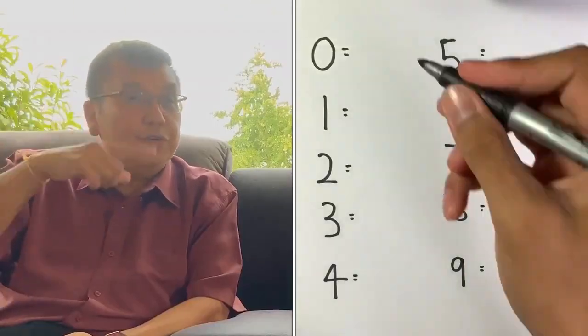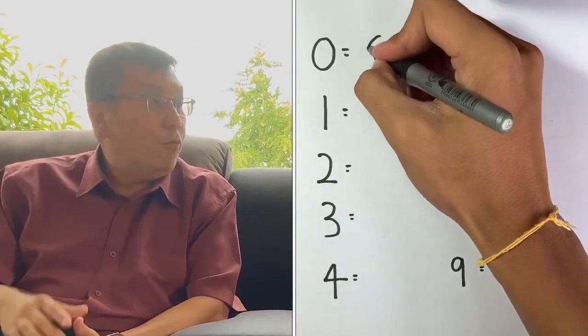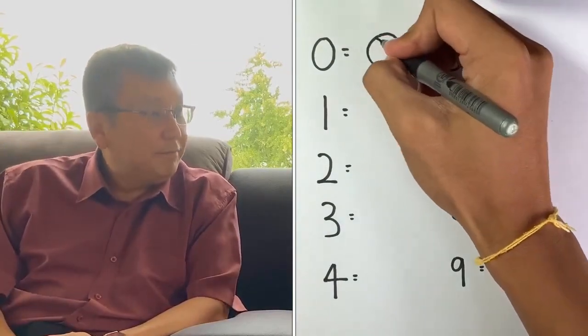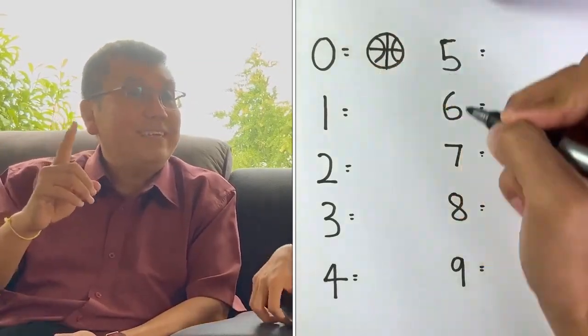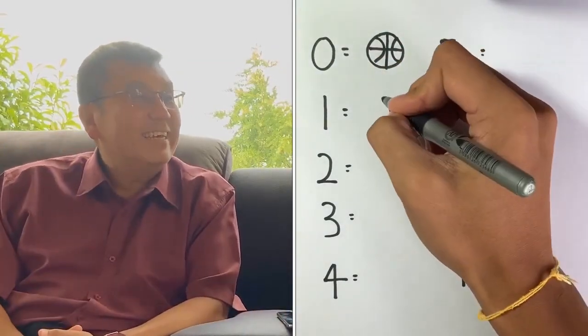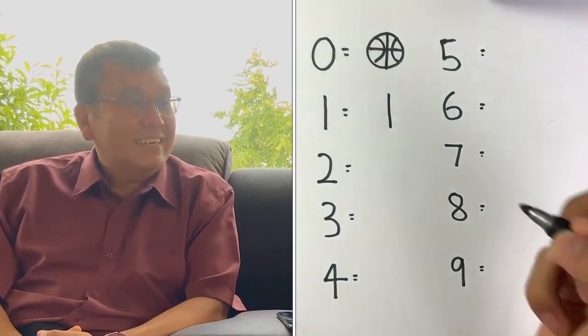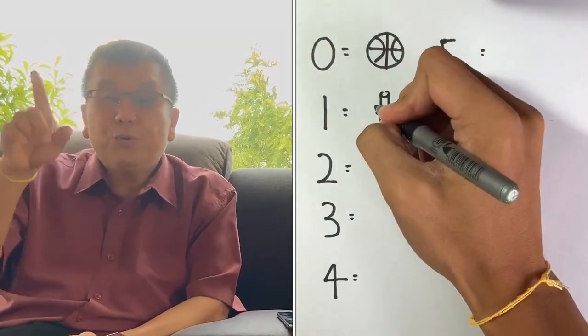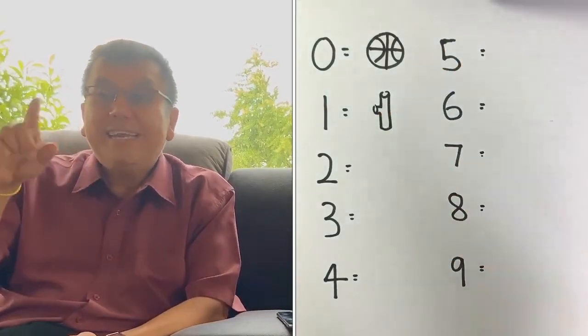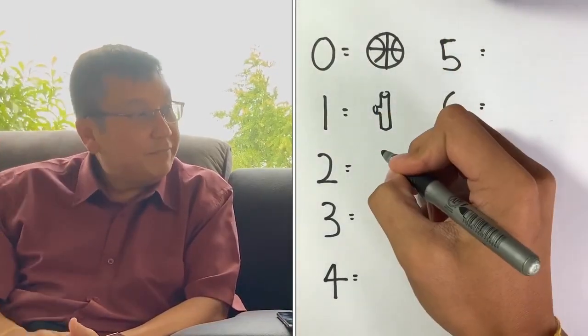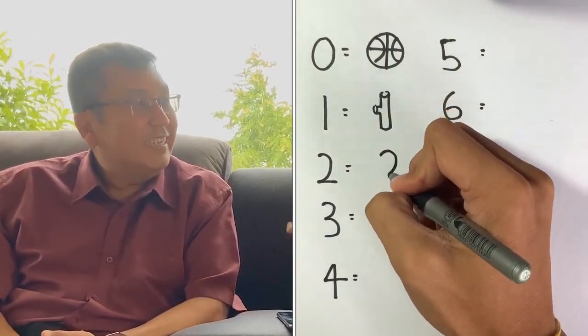So what were the images you used for each digit? 0 represents a ball. 1 represents a stick. A 2 represents a swan.